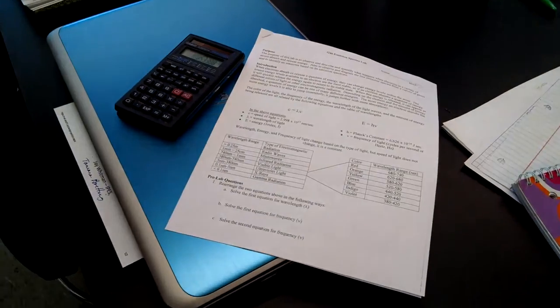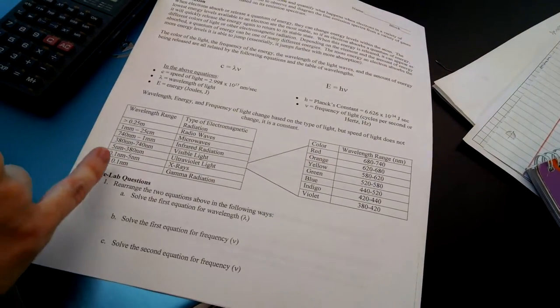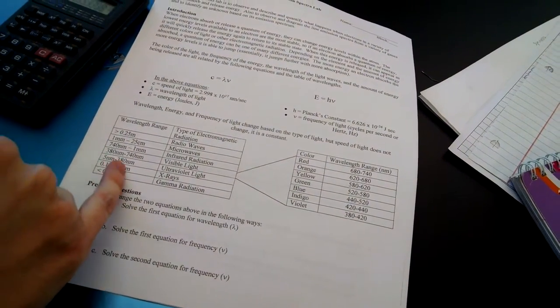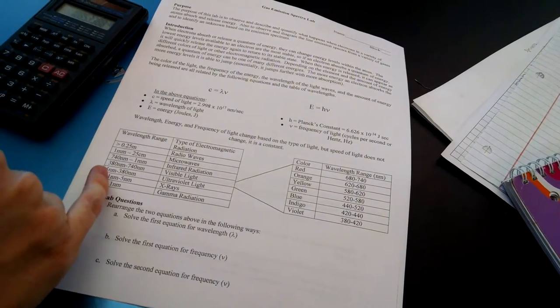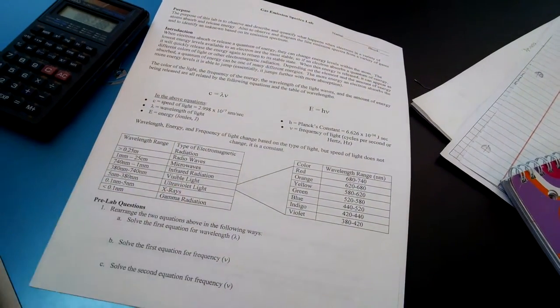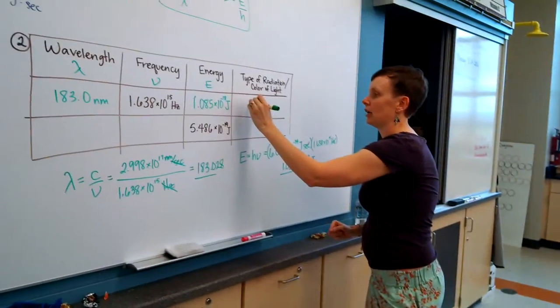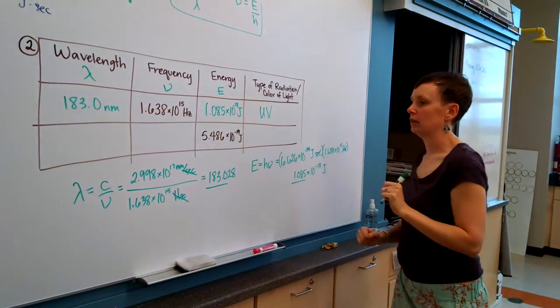Oh sorry, 183.0 fits into this one, 5 nanometers to 380. I was thinking 800, not 183. Okay, so 5 to 380, so that's ultraviolet, and that's what I'm going to write here in my table.